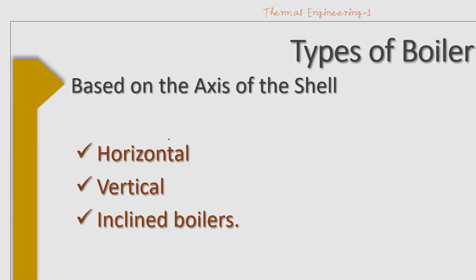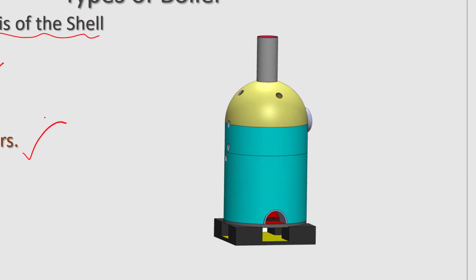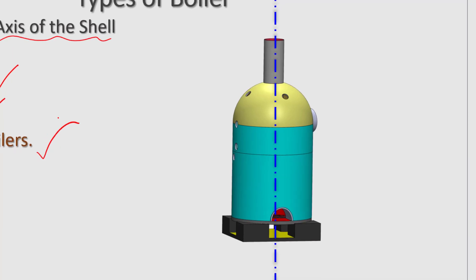Based on the axis of the shell, boilers may be classified as horizontal, vertical, or inclined boilers. For example, the simple vertical boiler is a vertical boiler because the axis of the boiler is vertical. The simple vertical boiler is therefore a single tube, vertical, fire tube boiler.